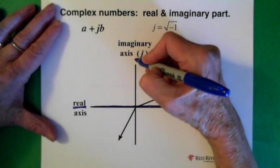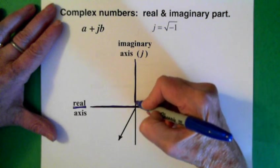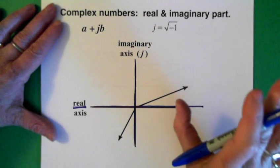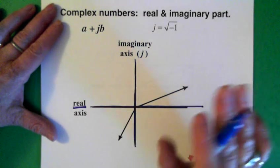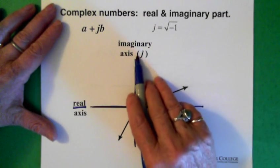And the vertical axis, the y axis, is the imaginary axis. And the imaginary axis is called j.